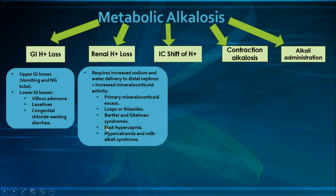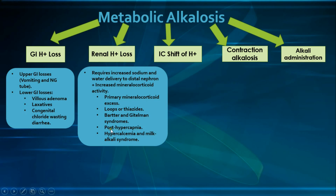Post-hypercapnia alkalosis occurs in chronic respiratory acidosis, where compensatory increased renal hydrogen ion excretion raises serum bicarbonate. The patient's pH remains near normal due to ongoing respiratory acidosis, but once treated by mechanical ventilation or other means, there is a drop in PaCO2 and the pH rises, causing alkalosis.